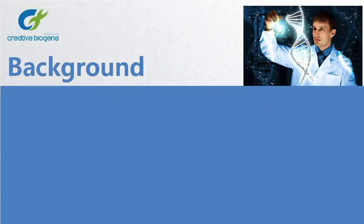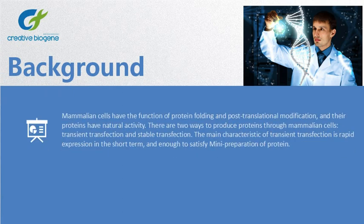Firstly, let's take a brief look at transient transfection. Mammalian cells have the function of protein folding and post-translational modification, and the proteins have natural activity. There are two ways to produce proteins through mammalian cells: transient transfection and stable transfection. The main characteristic of transient transfection is rapid expression in the short term, and enough to satisfy many preparations of protein.